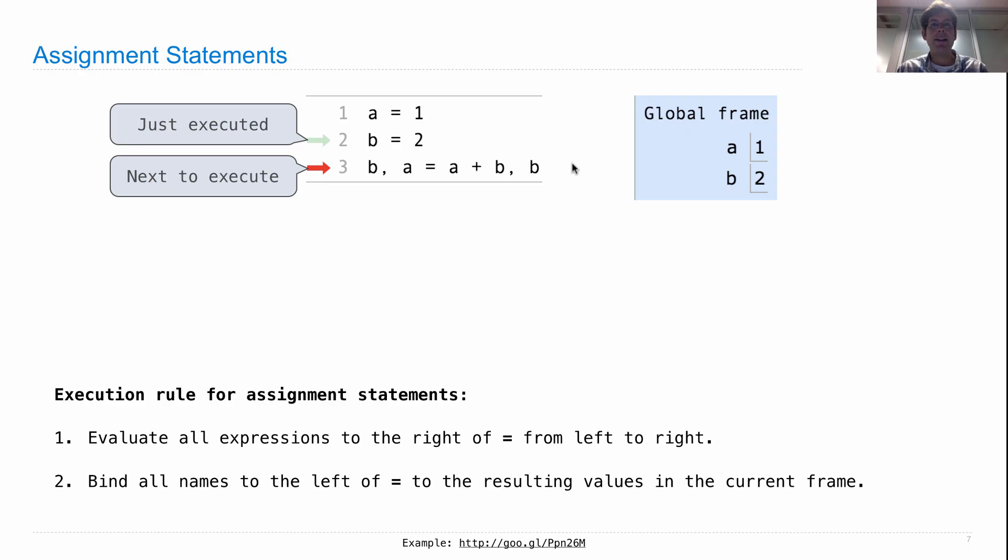So in this case, here are all the expressions to the right of equals. We get a plus b, which evaluates to 1 plus 2 is 3. So this evaluates to 3. B evaluates to 2. And then, second step, bind all names to the left of equals to the resulting values. So b will be bound to 3 and a will be bound to 2, the value of that expression.